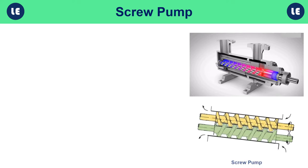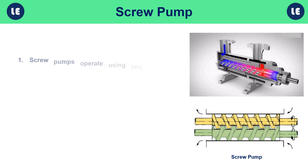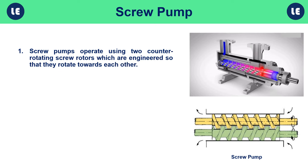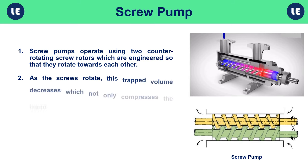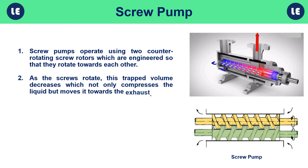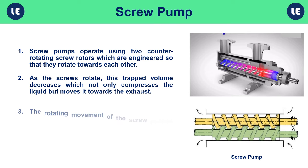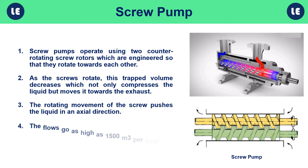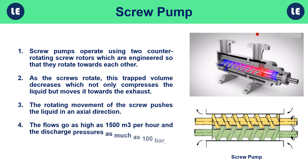Screw pumps operate using two counter-rotating screw rotors which rotate towards each other, trapping liquid in the space between the screws. As the screws rotate, this trapped volume decreases, compressing the liquid and moving it towards the exhaust. The rotating movement pushes the liquid axially in a straight line. Flow rates go as high as 15 m³ per hour and discharge pressures as much as 100 bar.